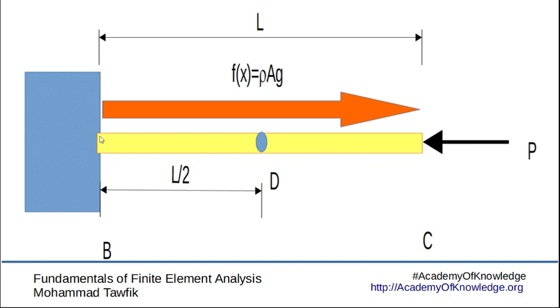First we're going to handle the problem using only two elements. So I'm going to divide this bar into two parts, BD and DC. The bar is fixed from the left hand side, so we have ub equals zero.